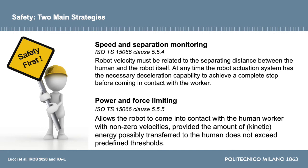Power and force limiting allows the robot to actually come into contact with the human worker at non-zero velocities. The major limitation concerns the amount of kinetic energy the robot can possibly transfer to the human worker, which must be monitored. That depends on the mass of the robot and the velocity squared, and the controller monitors this quantity to guarantee it does not exceed a predefined threshold.